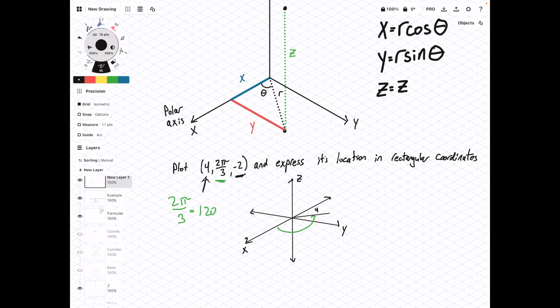So this is going to look like this. And we'll end up somewhere down under the x, y plane, and this is where our point will be. Now, if we want to figure out the Cartesian coordinates of this, we just plug in the R and theta values into these formulas.